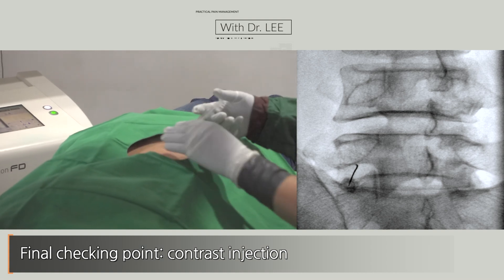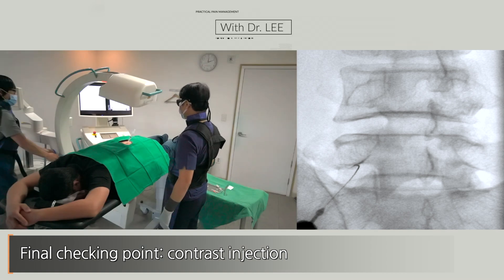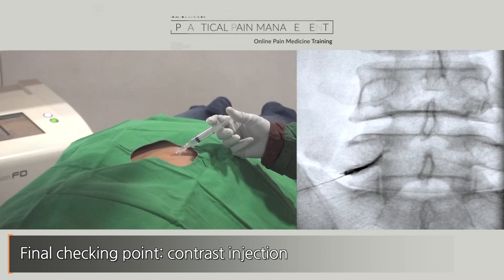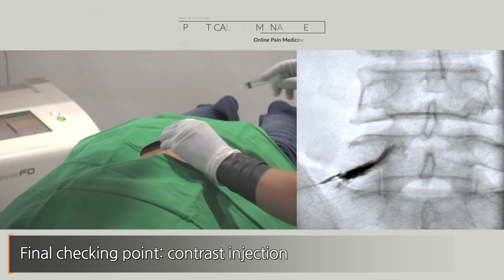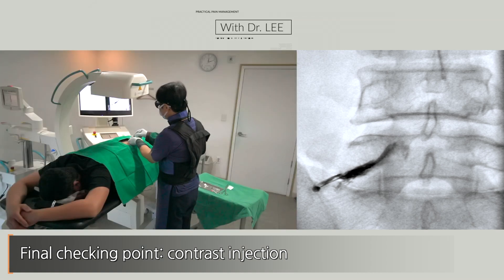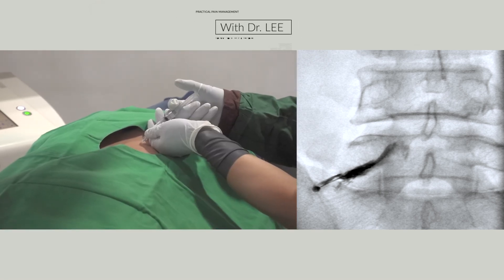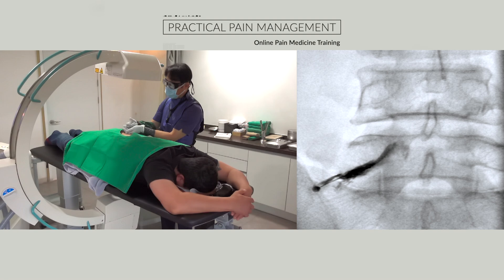If I am sure my needle has reached the ideal target, I connect the contrast-filled syringe with the spinal needle. While assembling syringes or during the injecting process, I must stabilize the spinal needle. Contrast media injection is the final touch before steroid injection. I have to stabilize the spinal needle while I disconnect the syringe. And finally, steroid injection. I have used an injectant mixture of local anesthetics, high concentration of dextrose solution, and triamcinolone.